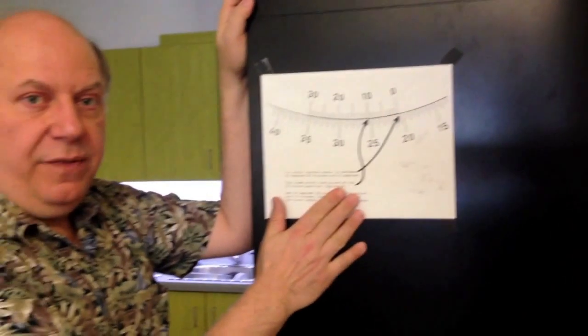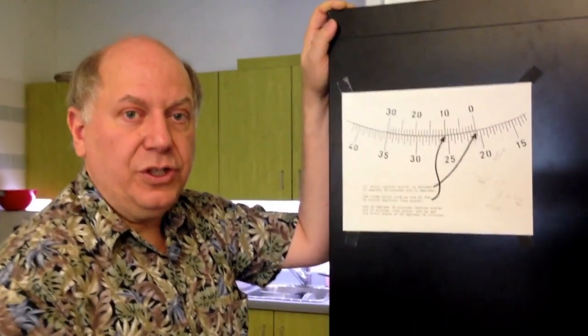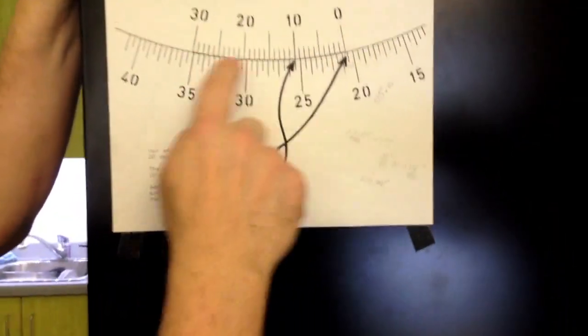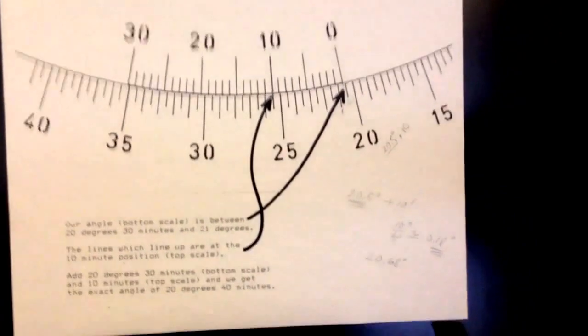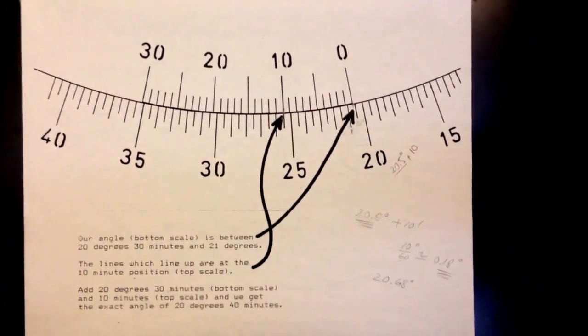So we'll go over to a chart next door, and I'll show you how to read the Vernier scale. Okay, so come with me. This chart that we have here is a blown up version of the Vernier scale on your spectrometer, and this will allow you to read it correctly.